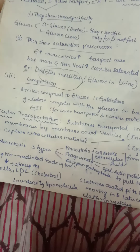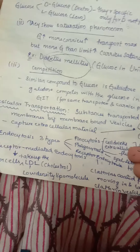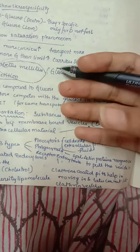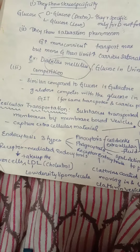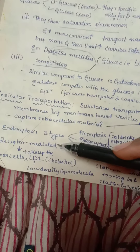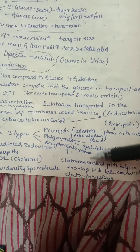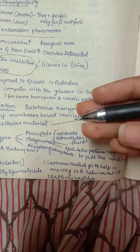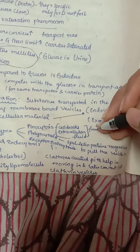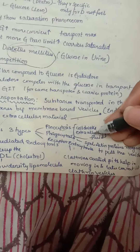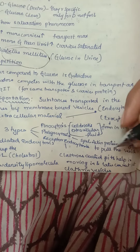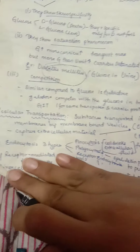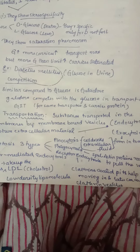Now let us look at vesicular transport. Substances are transported by membrane-bound vesicles. Transport into the cell is called endocytosis, and sending vesicles out is called exocytosis. Endocytosis is of three types: pinocytosis — the cell drinks extracellular fluid; phagocytosis — uptake of microorganisms using special actin proteins; and receptor-mediated endocytosis — where clathrin-coated pits help move material in, converting into clathrin vesicles. An example is liver cells taking up LDL cholesterol via clathrin-coated pits.